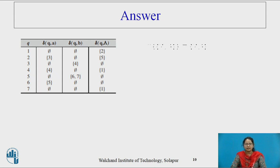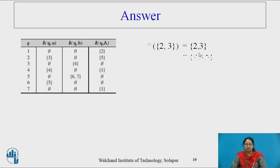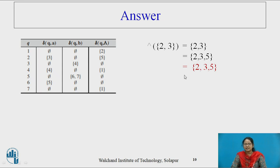Hope you got the answer. Null closure of {2, 3}: both 2 and 3 are in the set. From 2, without processing anything, machine moves to 5, so 5 is added. From 5, there is no null transition. So the answer is {2, 3, 5}.